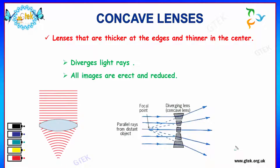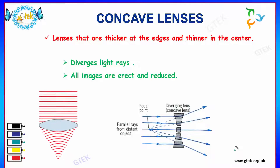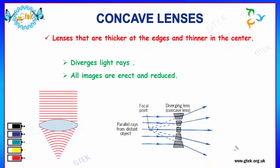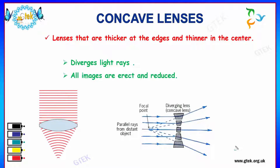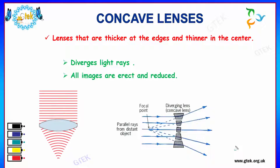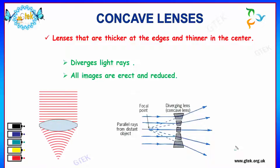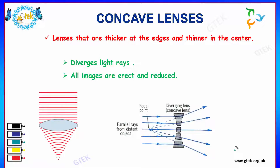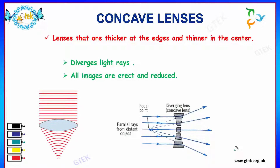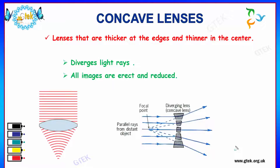If we consider the concave lens: concave lenses are thicker at the edges and thinner in the centre. The concave lenses diverge light rays, and the images formed by concave lenses are erect and reduced.